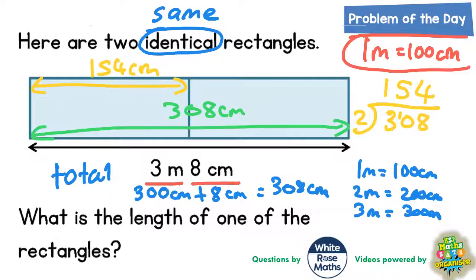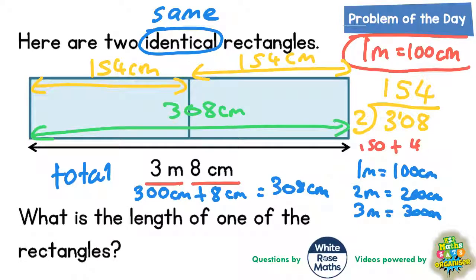Because they are identical, the other rectangle would also be 154 centimeters. Some people may have been able to do that in their heads — because we're halving it, you could say half of 300 is 150, and half of 8 is 4, add them together: 150 plus 4 still gives you 154. So your final answer: the length of one of the rectangles is 154 centimeters.